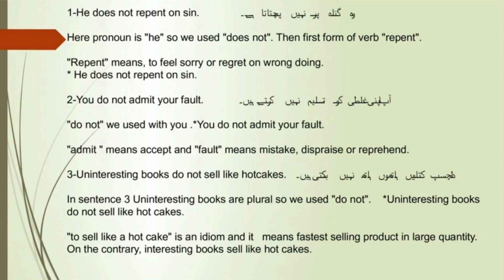Sentence number 3: Uninteresting books do not sell like hot cakes. In sentence 3, 'uninteresting books' is plural, so we used 'do not.' Uninteresting books do not sell like hot cakes. To sell like a hot cake is an idiom and it means the fastest selling product in large quantity. On the contrary, interesting books sell like hot cake.